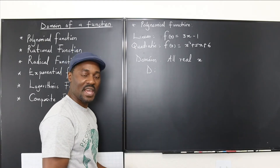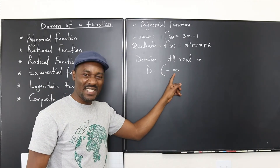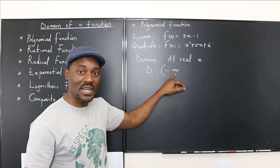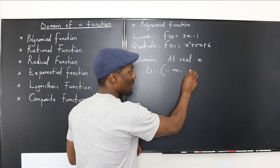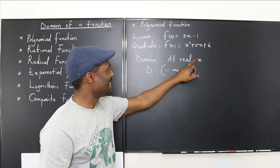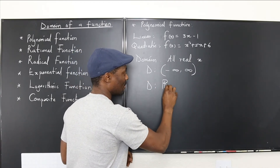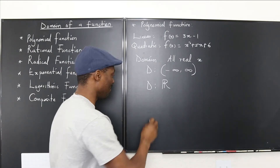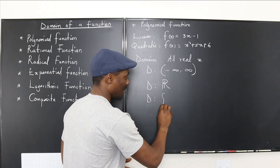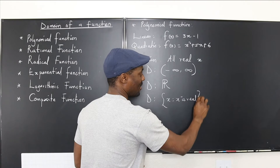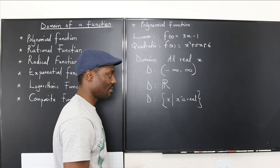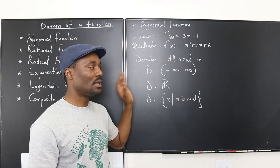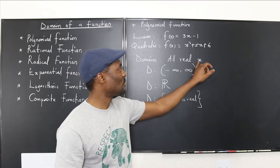Another way to write it: the domain is from negative infinity to positive infinity — infinity itself is not included, so we use parentheses. You can also write D is the set of real numbers, or in set-builder notation: the domain is the set of x such that x is real. However the notation is required, just master it. What's important is that the domain of all polynomials is all real values of x — or whatever variable — so we can just say all real numbers.